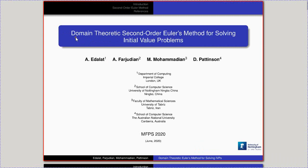The title of the work is "Domain Theoretic Second Order Euler's Method for Solving Initial Value Problems." I will go through all these terms throughout the talk and hopefully make them clearer. My name is Amin Farjudian from University of Nottingham, Ningbo, China, and I'm presenting on behalf of my co-authors Abbas Edalat from Imperial College, Meena Mohamedian from University of Tabriz, and Dirk Pattinson from the Australian National University.